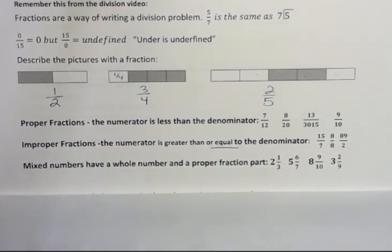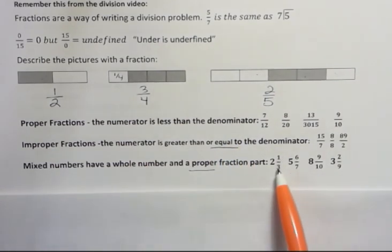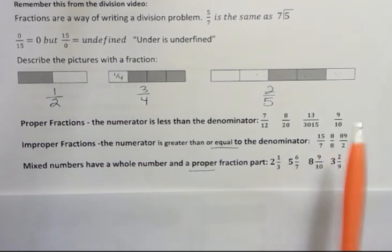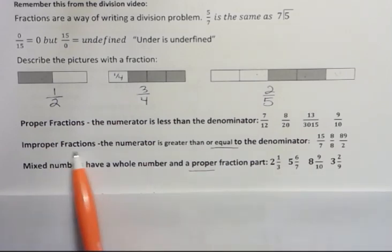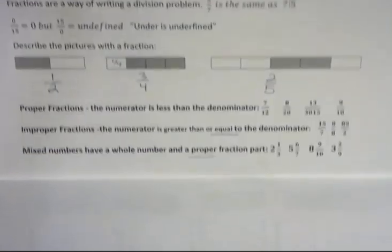And finally, we have mixed numbers. Mixed numbers have a whole number and a proper fraction part. Notice I said proper fraction part because the part over here in a correctly written mixed number would be a proper fraction. So, 2 and 1 third, 5 and 6 sevenths, 8 and 9 tenths, 3 and 2 ninths. Those are all mixed numbers. If I had something where I had an improper fraction attached, I'd have to simplify that, which we'll do in a later video.